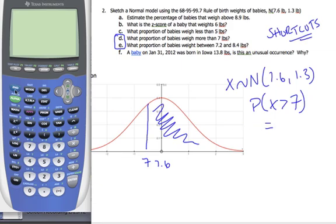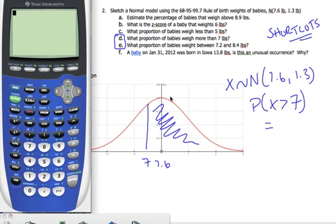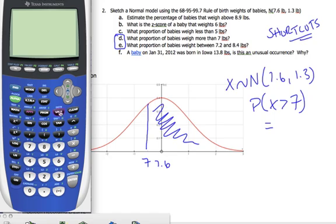Here is what I'm going to put in my calculator, though. I'm not going to actually calculate the Z score. What I can do is go second. So, in my calculator, I'm going to go straight to my normal CDF, same as before. And I'm going to go from 7, which is not my Z score, but it's my X value, comma, big giant number.